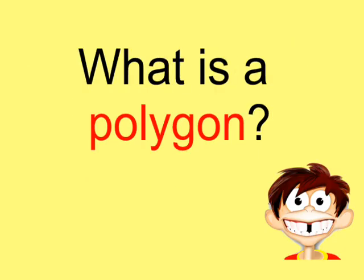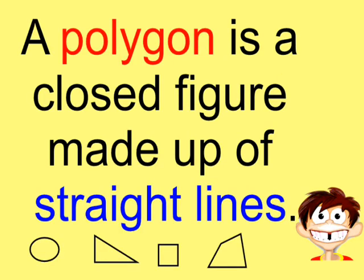Well, what is a polygon? A polygon is a closed figure made up of straight lines. Now, three of these are polygons. This oval is not a polygon because it's not made up of straight lines. These are all closed figures, and they're all made up of straight lines.